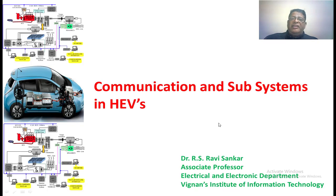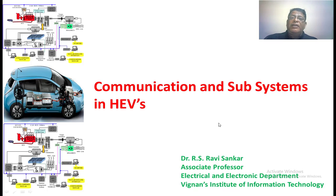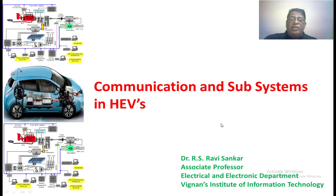Welcome back to the class on electrical vehicles and hybrid electric vehicles. In this lecture we are going to discuss about communication and subsystems in a hybrid electric vehicle. Communication is nothing but the passing of information from one place to another place. When we are driving the vehicle, sometimes we are accelerating, sometimes applying the braking, sometimes using the audio or air conditioning. All these things involve applying some sort of signal to the system, and in electrical or hybrid electric vehicles this happens automatically by passing information from one subsystem to another.